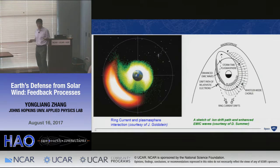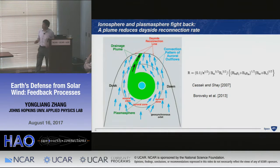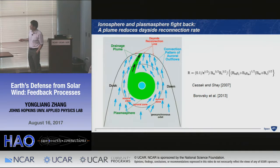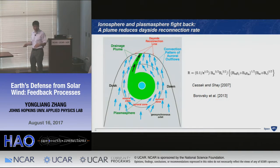The plasmasphere can also fight back. During storms, the plasmaspheric plume can extend to the dayside and even cross the magnetic poles. When high-density plume plasma arrives at the dayside reconnection site, it increases the local plasma density. According to the reconnection rate formula, increasing the density on the magnetospheric side reduces the reconnection rate — this is another negative feedback mechanism where the ionosphere and plasmasphere resist changes imposed by the solar wind.